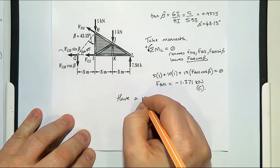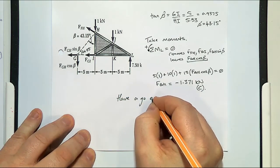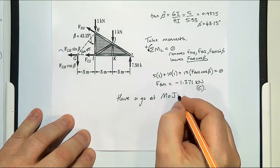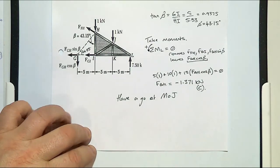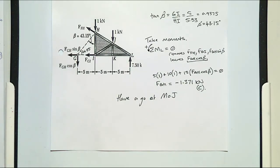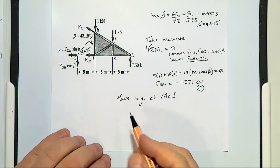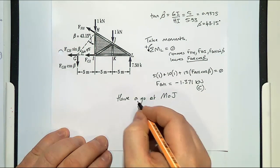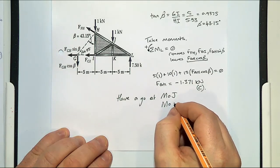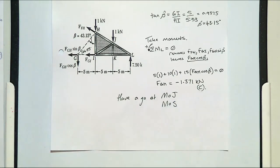Because it's minus, it means the FGH arrow is pointing the wrong direction, so you'll work out that it's in compression. So have a go at the method of joints — you don't have to follow where I take moments. Someone mentioned you could take moments around H. Prove to yourself that you can use this technique, and also have a go at the method of sections.